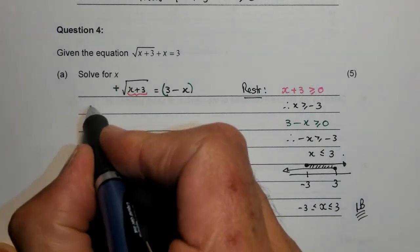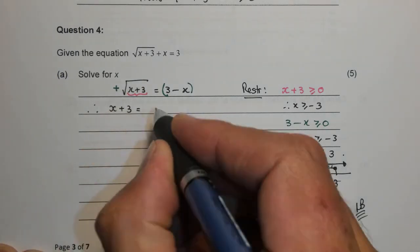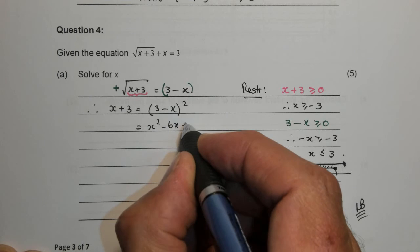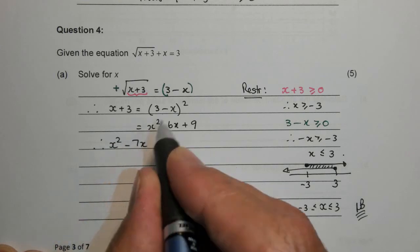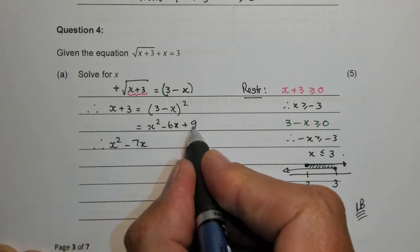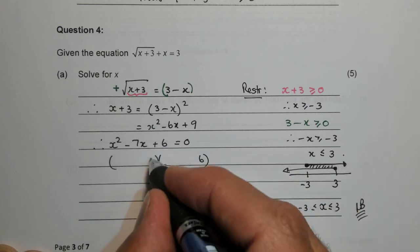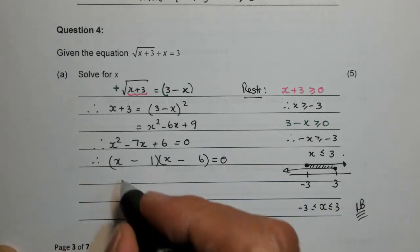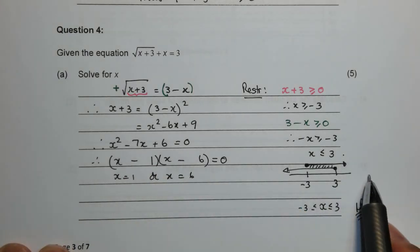Once we've solved this we're just going to see does our answer lie there and if it doesn't then we have to omit it. Now the process can start. If I square both sides the square root disappears. x plus 3 is equal to 3 minus x all squared. If I square that I get x squared minus 6x plus 9. I put everything to the one side, I get x squared minus 7x plus 6 which is 0. Signs the same both negative, so the factors will be x minus 6 and x minus 1.